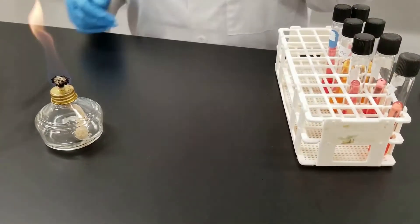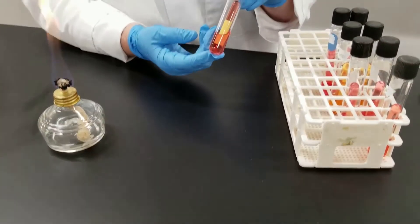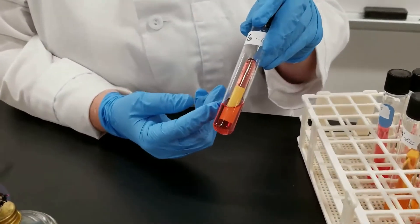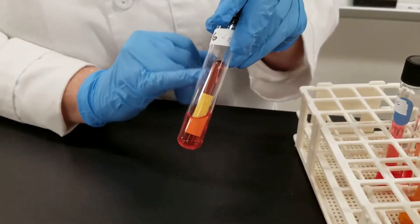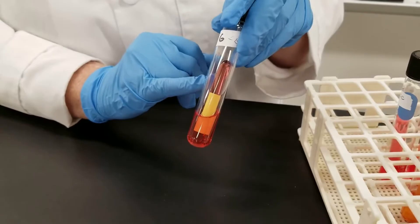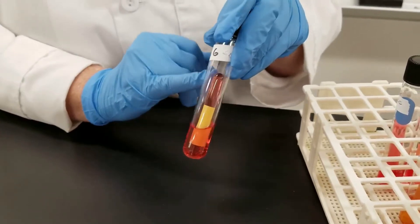In these tubes, we have obviously, in a broth solution, the sugar, and then we have these inverted tubes, often also known as a Durham tube.